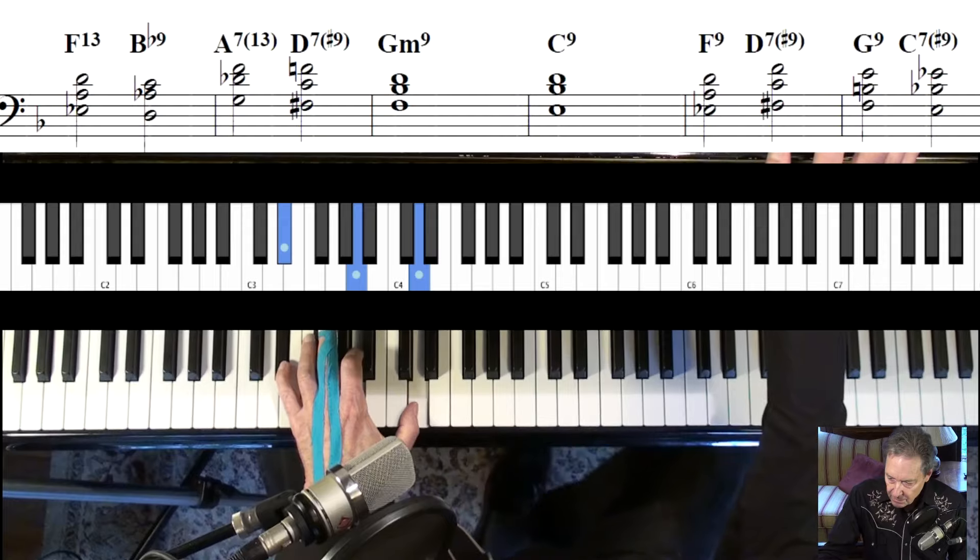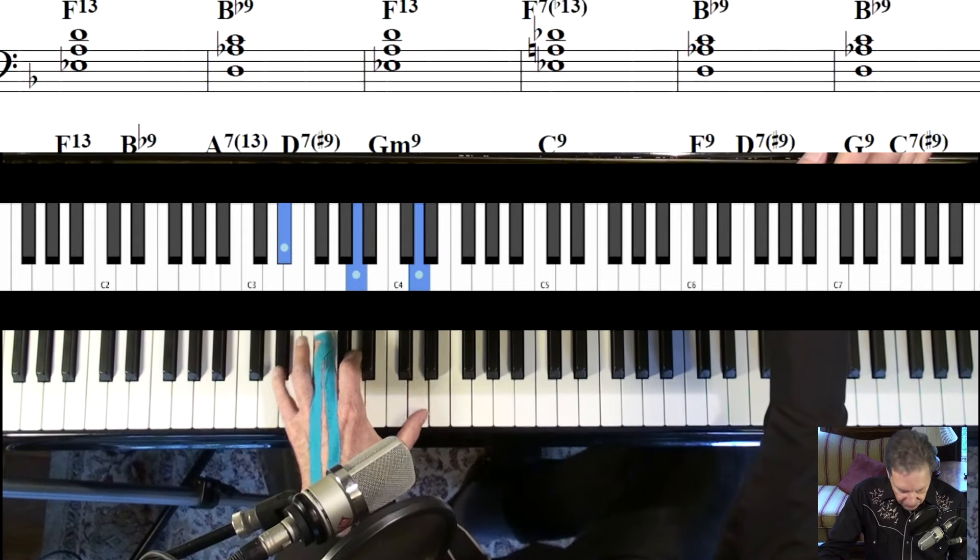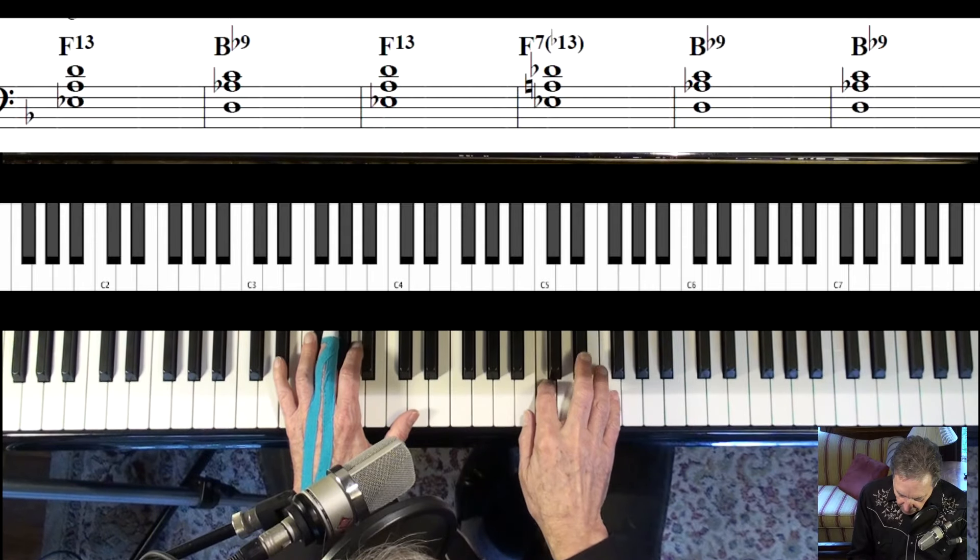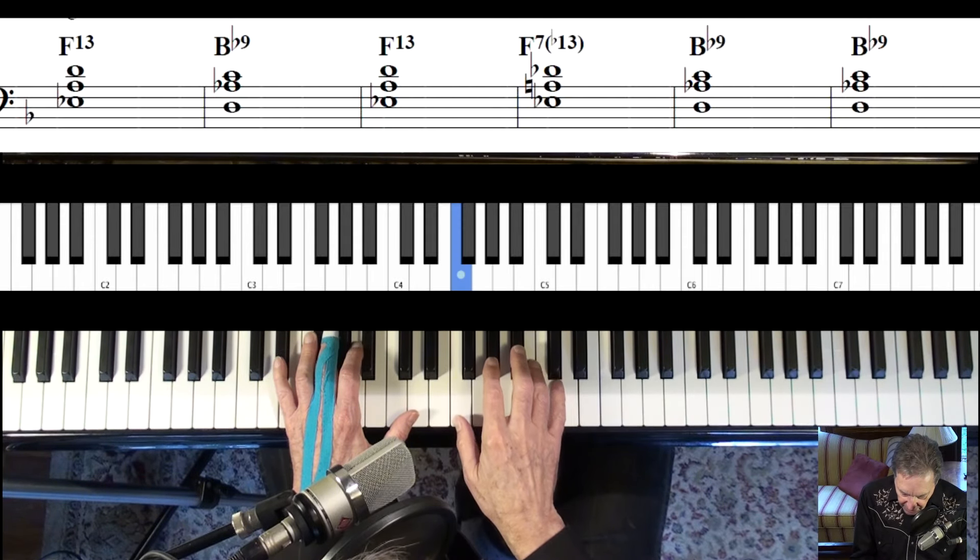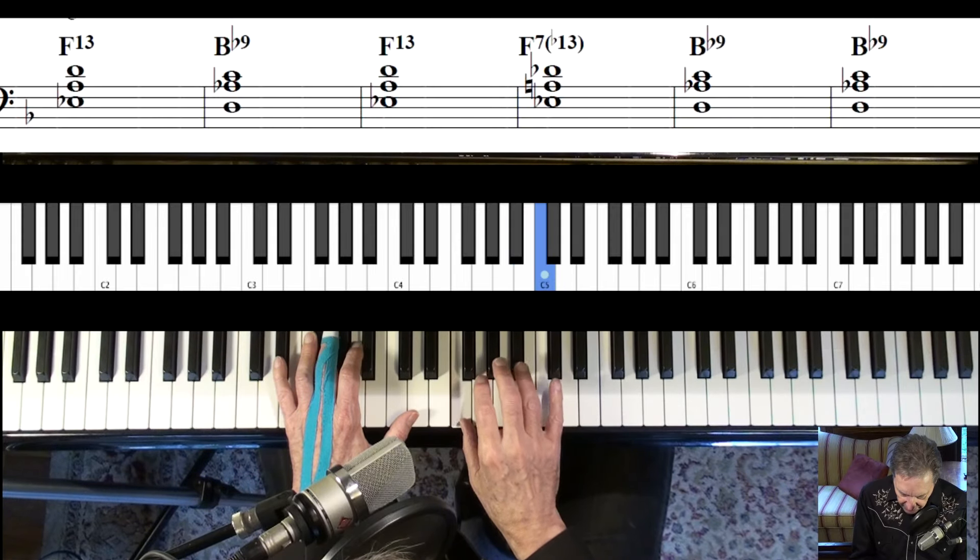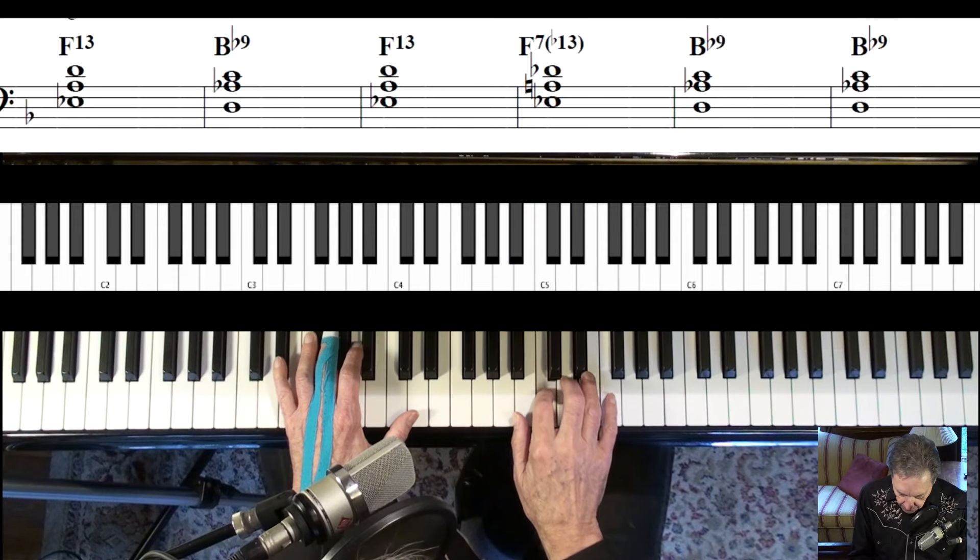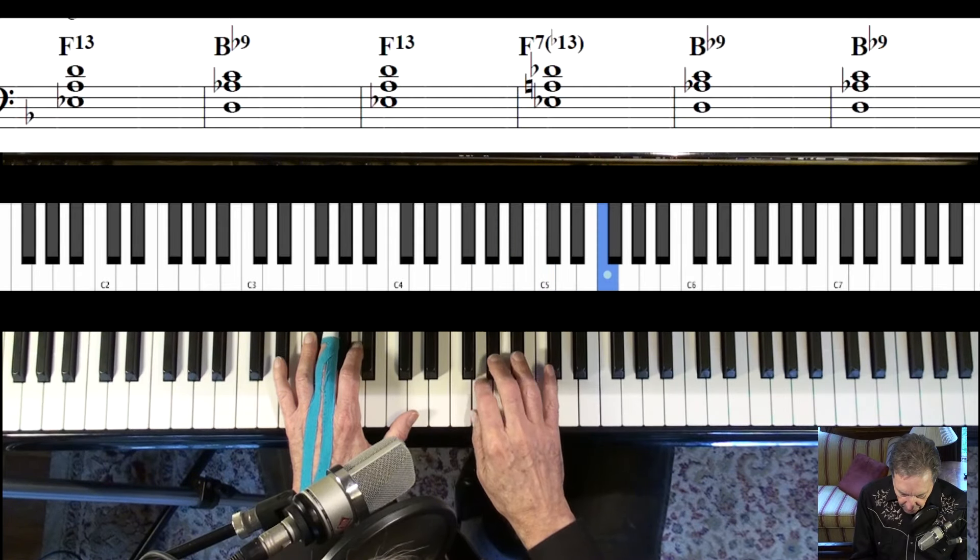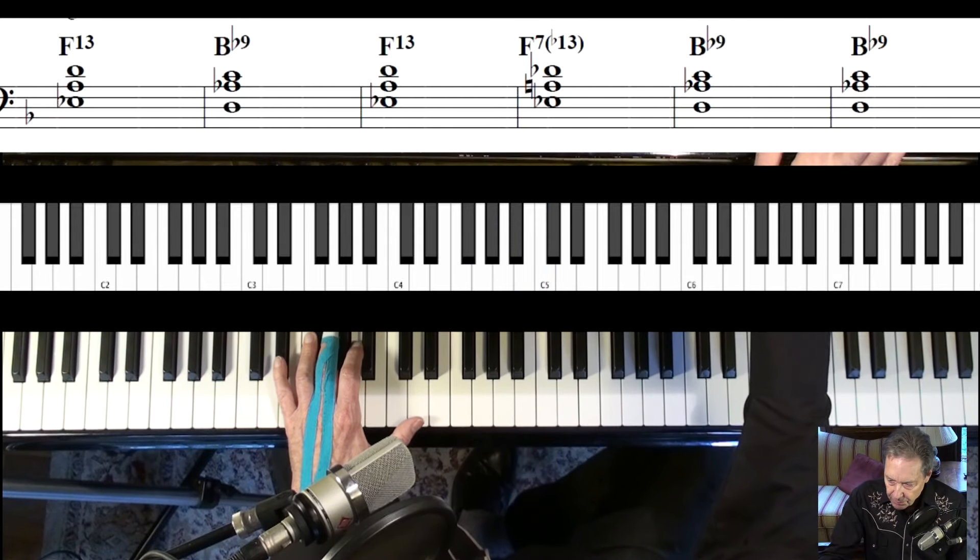So I'm going to play a little bit more of the track now. And I will start with just the rootless voicings. Then I'm going to add some simple improv using mostly the blues scale. Or maybe I'll go like this. Or just any of those notes are going to work. I'll keep it simple, though, because simple is best.